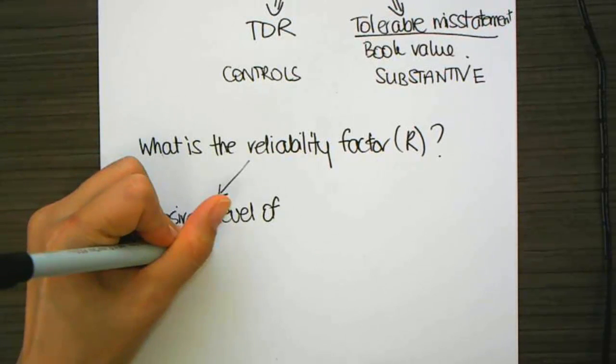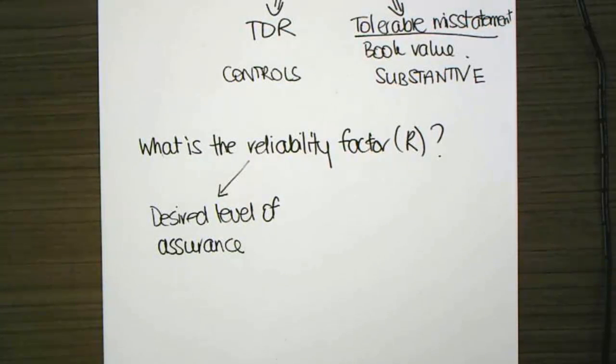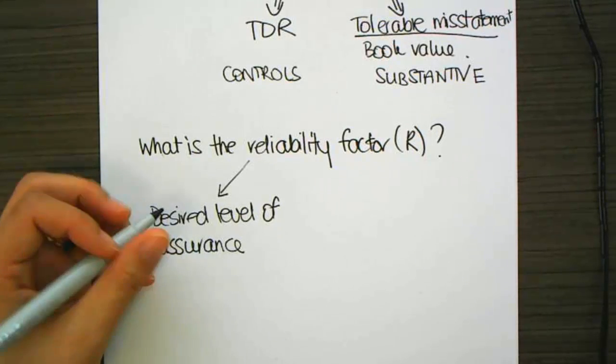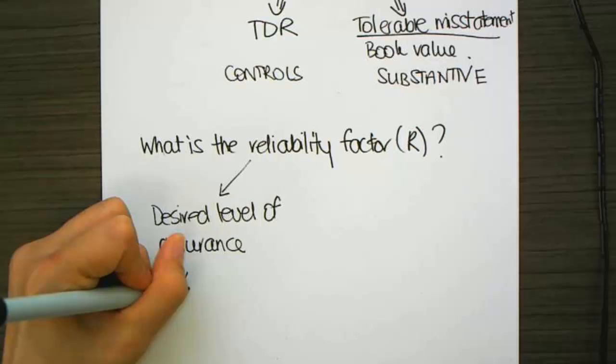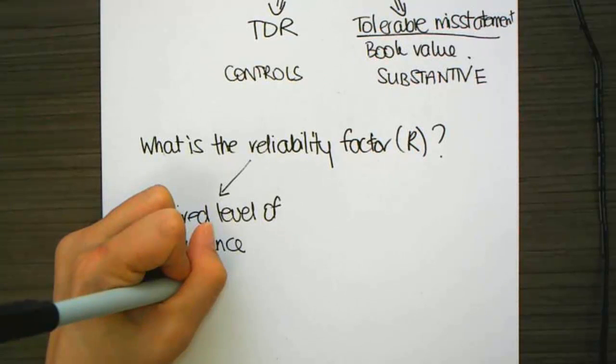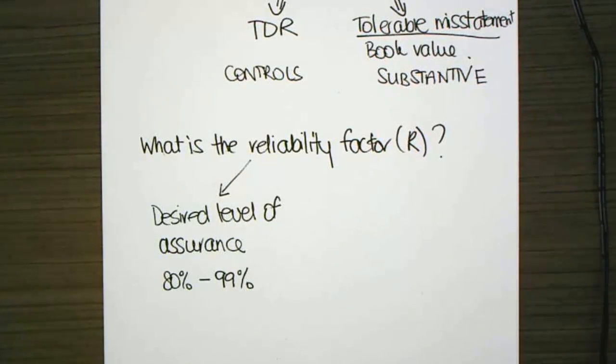So, for the reliability factor, you use your desired level of assurance, and that desired level of assurance is going to be anywhere from 80% to 99%. Now, there's a reason we don't have 100% level of assurance, because if we're giving 100% assurance, then we're actually going to need to test the entire population, and we won't actually be sampling. So, 99% is the maximum that we'll go there.